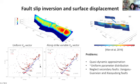I want to point out that we're using the quasi-dynamic approximation for the earthquake sequence model with a more or less uniform distribution of model parameters along the fault with depth-variable distribution. We also neglected a couple of secondary faults that, as shown by geodetic inversion, were also involved in the co-seismic rupture.